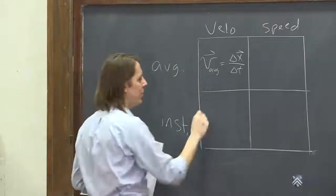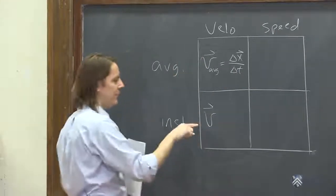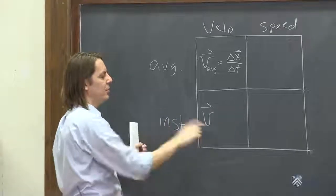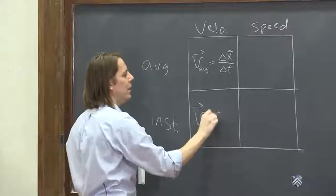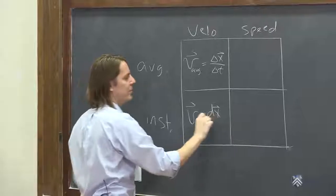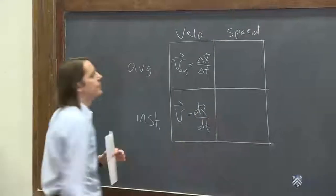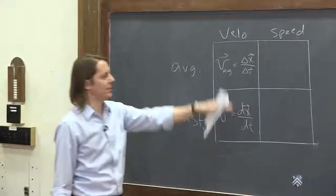And then we said, oh, let's let delta t be really small. And then we said that was the velocity, the instantaneous velocity. No subscript, but a vector symbol. And that was dx, or position of course is a vector, dt. We turned it into a derivative just by making delta t small.